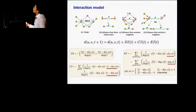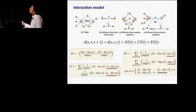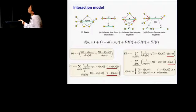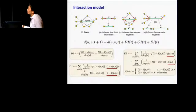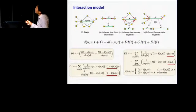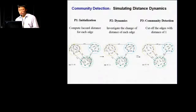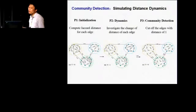For the third situation with exclusive neighbors, we check whether X is similar to V. If X is very similar to V, this makes the distance shorter. We introduce a cohesion parameter lambda: if the similarity is larger than this threshold, it has a positive effect; otherwise it has a negative effect, making the distance become longer. After defining this interaction model, we can simulate the distance dynamics.